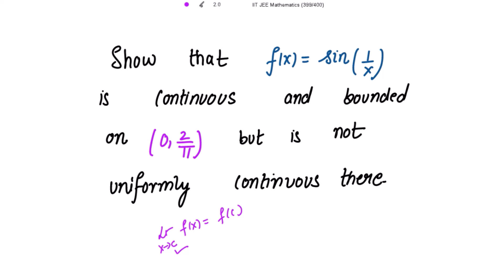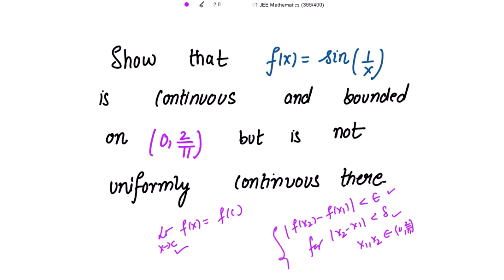When the function is uniformly continuous, we need to show that |f(x2) - f(x1)| is strictly less than epsilon, for |x2 - x1| strictly less than delta, where epsilon and delta are both strictly positive, for x1 and x2 belonging to the given interval, which is 0 to 2/π. This is the condition for uniform continuity, and the previous condition is for continuity.